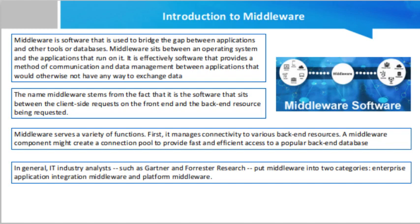Now why is it called middleware? The name middleware stems from the fact that it is the software that sits between the client-side requests on the front end and the back-end resources being requested. A client can make a request with network-based interactions. That client is typically an application that resides on the front end, which is where the user interacts with software. Resources such as databases, message queues, NoSQL data stores, and file servers are often referred to as being part of the back end. Middleware sits between these ends.